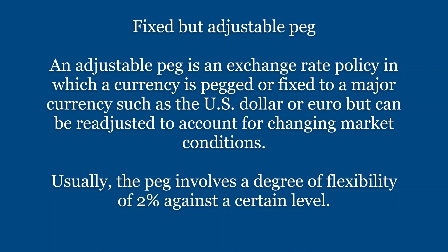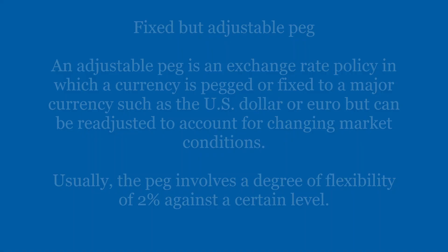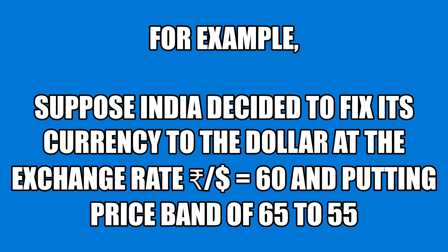The fixed exchange rate is fixed but adjustable. What is fixed? For example, 1 US dollar equal to 60 rupees. Based on market conditions, the rate will be fixed by the RBI or central bank within a permitted limit or band — for example, between 55 and 65 rupees. Within that range, the price is considered fixed.